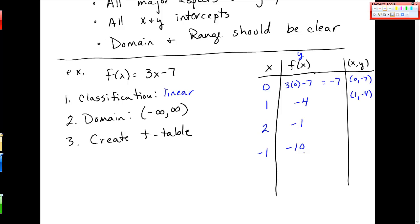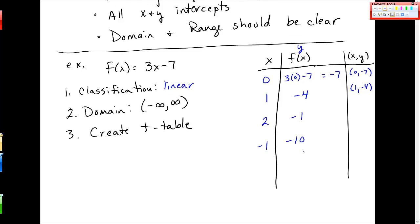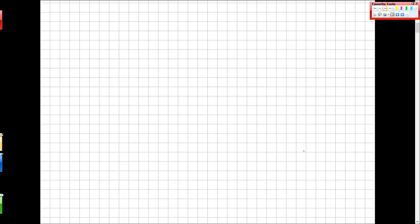So I have these 4 points: (0, -7), (1, -4), (2, -1), and (-1, -10). And so when I go to graph, I'm going to demonstrate the graphing. So I'm going to draw an axis here, x and y.